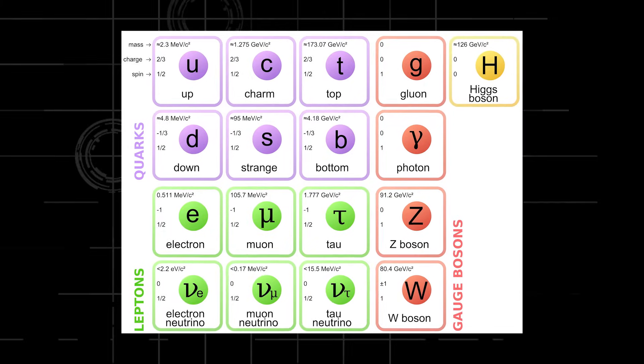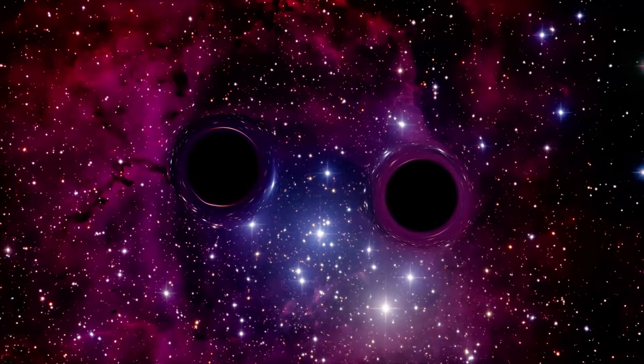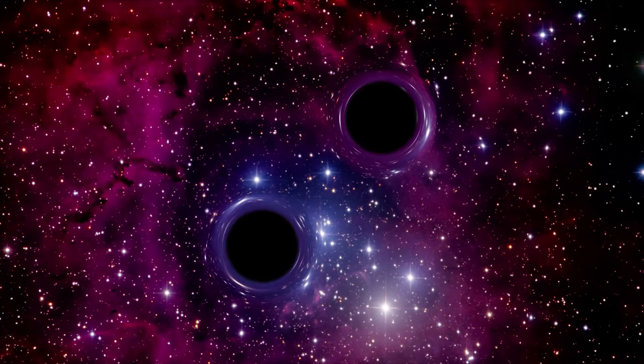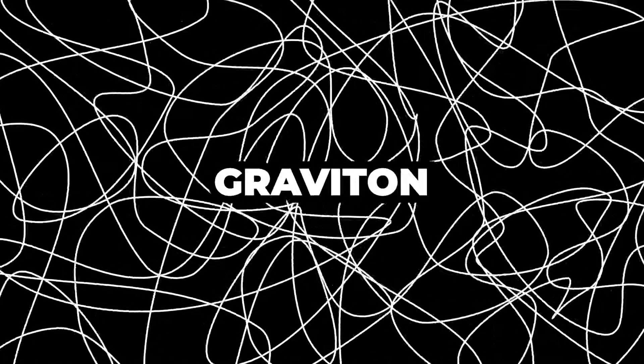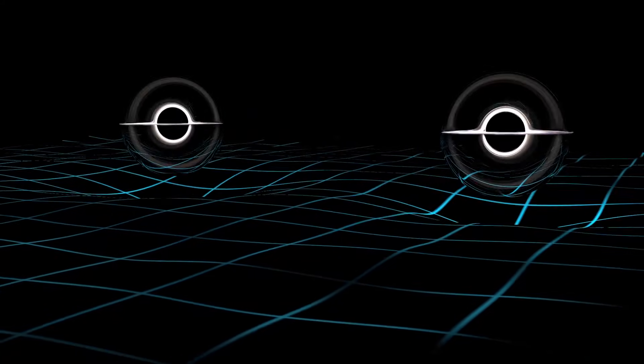Unlike the standard model of physics, which can explain everything except gravity, string theory can explain everything including gravity. The theory explains gravity the same way it explains other particles. A string can vibrate in a certain way that it can manifest itself as the hypothetical graviton, a quantum mechanical particle that carries the gravitational force.